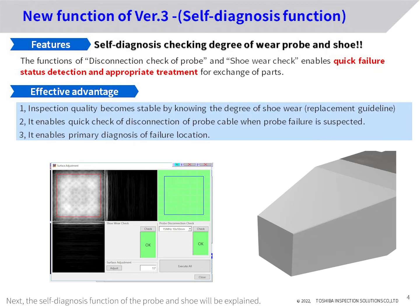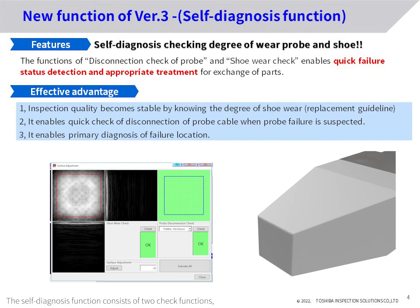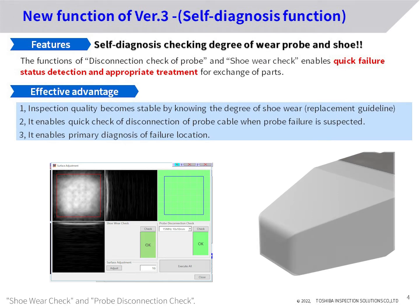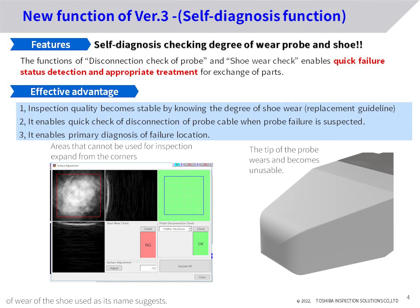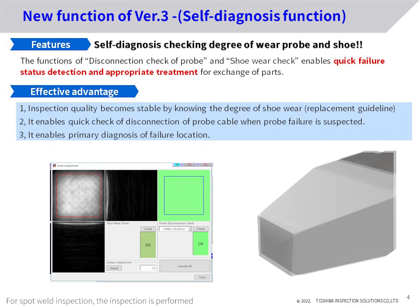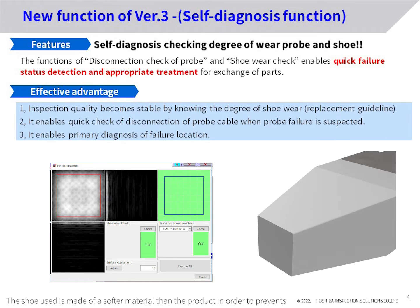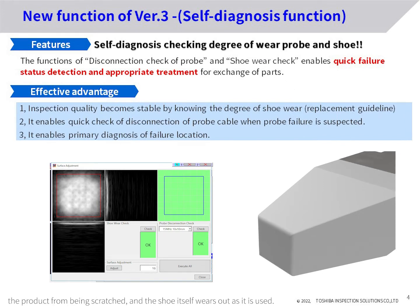Next, the self-diagnosis function of the probe and shoe will be explained. The self-diagnosis function consists of two check functions: shoe wear check and probe disconnection check. The shoe wear check function can check the degree of wear of the shoe. For spot weld inspection, the inspection is performed after attaching the shoe to the ultrasonic probe. The shoe is made of a softer material than the product to prevent the product from being scratched, and the shoe itself wears out as it is used.